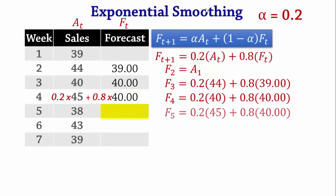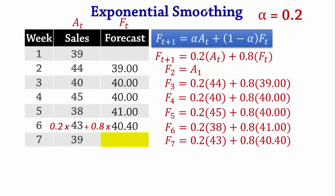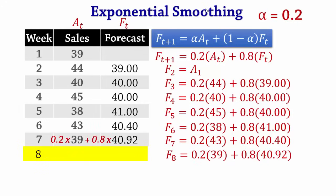For F5: 0.2 × 45 + 0.8 × 40 = 41. For F6: 0.2 × 38 + 0.8 × 41 = 40.4. F7 = 0.2 × 43 + 0.8 × 40.4 = 40.92. We can also forecast Week 8 as 0.2 × 39 + 0.8 × 40.92 = 40.54.